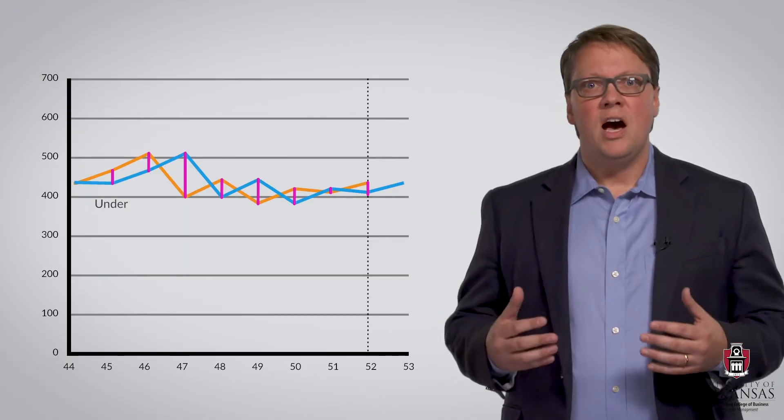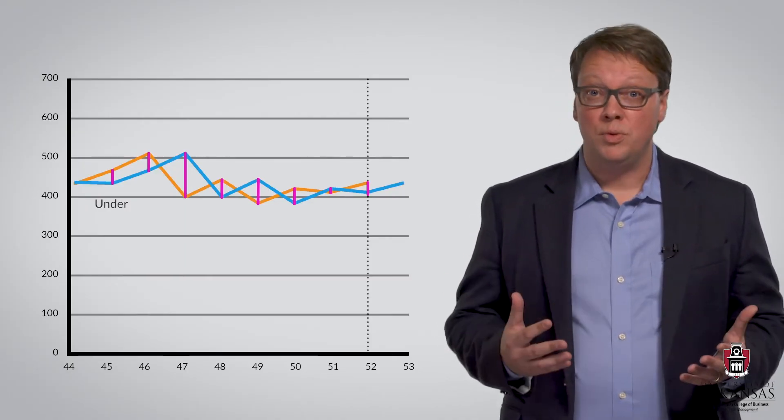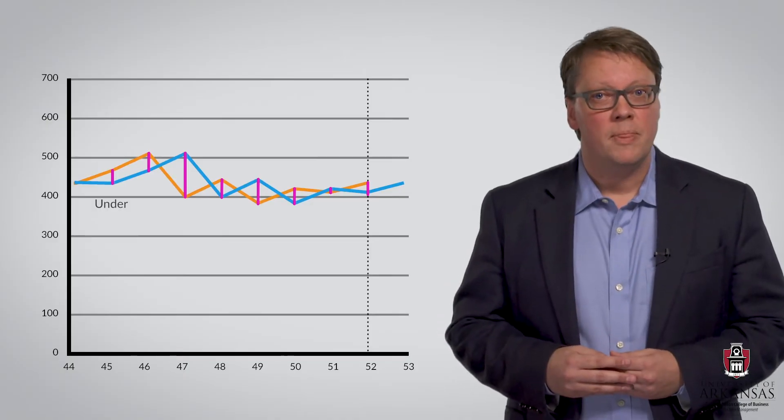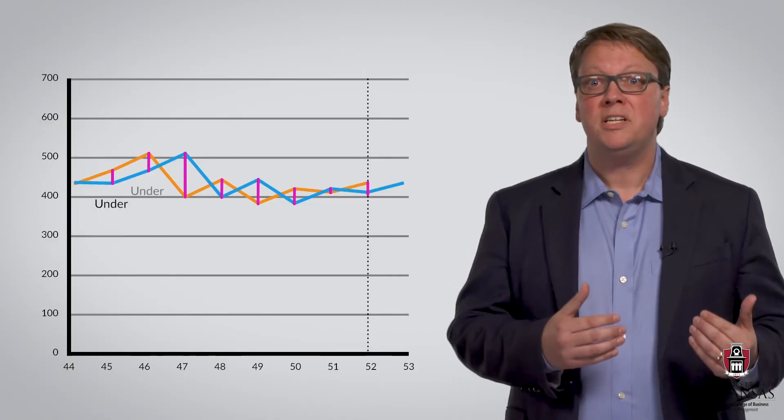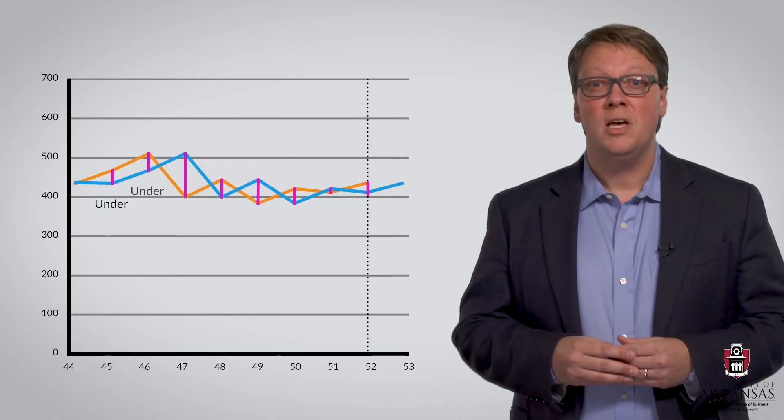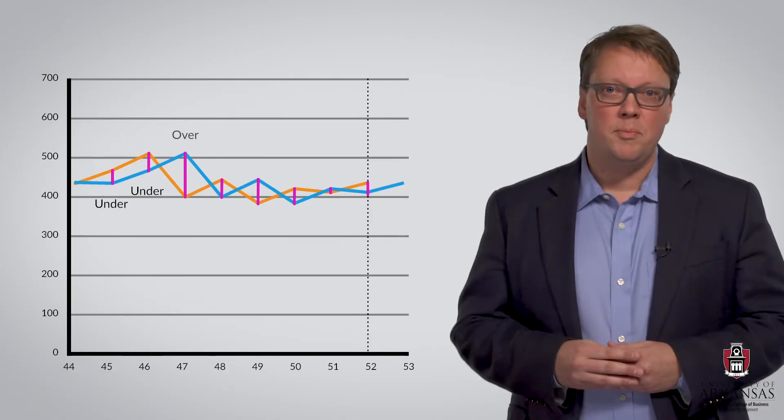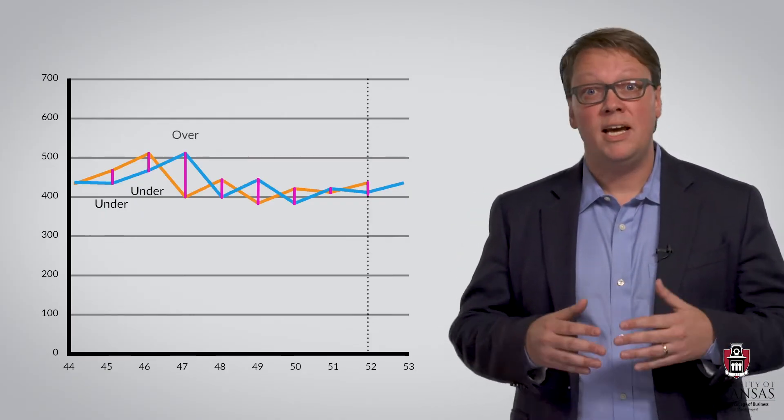That is, our forecast, shown in blue, was lower than true demand. Likewise, we underpredict the demand in period 46, but then overpredict the demand in period 47, and so forth.